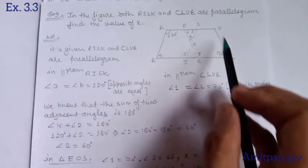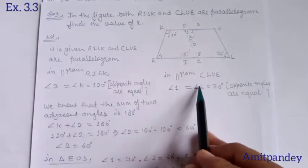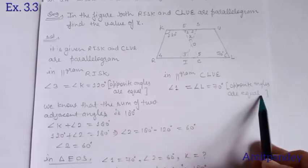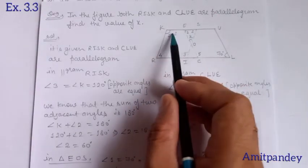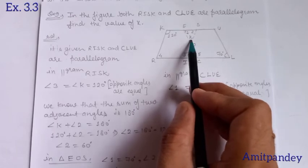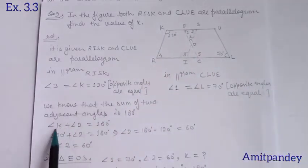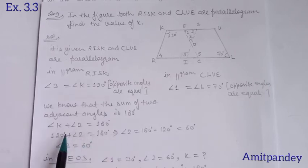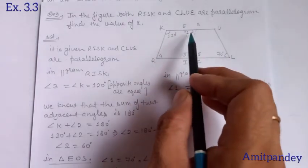In parallelogram CLUE, angle 1 is opposite to angle L which is 70°, so angle 1 equals 70°. The sum of two adjacent angles is 180°, so angle K plus angle 2 equals 180°. Since K is 120°, angle 2 equals 180 minus 120 equals 60°. Now we know angle 1 is 70° and angle 2 is 60°. As I already said, it is a triangle, and after using the angle sum property we can obtain the value of x.